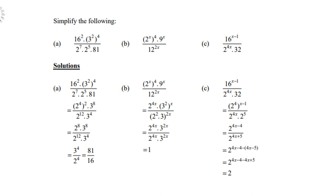Let's look at worked example A — simplify: 16 squared times 3 squared to the power 4, over 2 to the power 7 times 2 to the power 5 times 81. Convert: 16 equals 2 to the power 4, so 16 squared is 2 to the power 8. The 3 squared to the power 4 gives 3 to the power 8. In the denominator, 2 to the power 7 times 2 to the power 5 is 2 to the power 12, and 81 is 3 to the power 4. Then 2 to the power 8 goes down giving 12 minus 8 equals 4, and 3 to the power 4 gives 8 minus 4 equals 3 to the power 4. So the answer is 81 over 16.